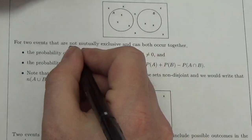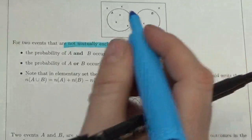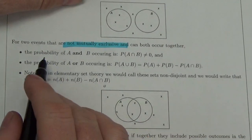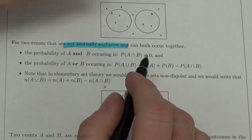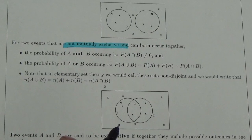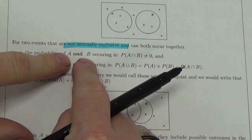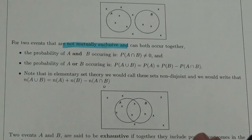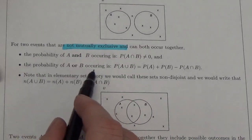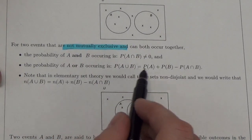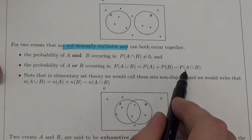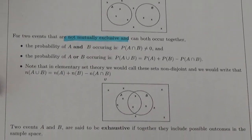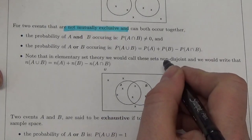When events are not mutually exclusive, there is some overlap — they can actually happen simultaneously. So the probability of A and B is not zero. For example, in a class, a student could be wearing both jeans and glasses. The probability of A or B is then: P(A) + P(B) − P(A and B).